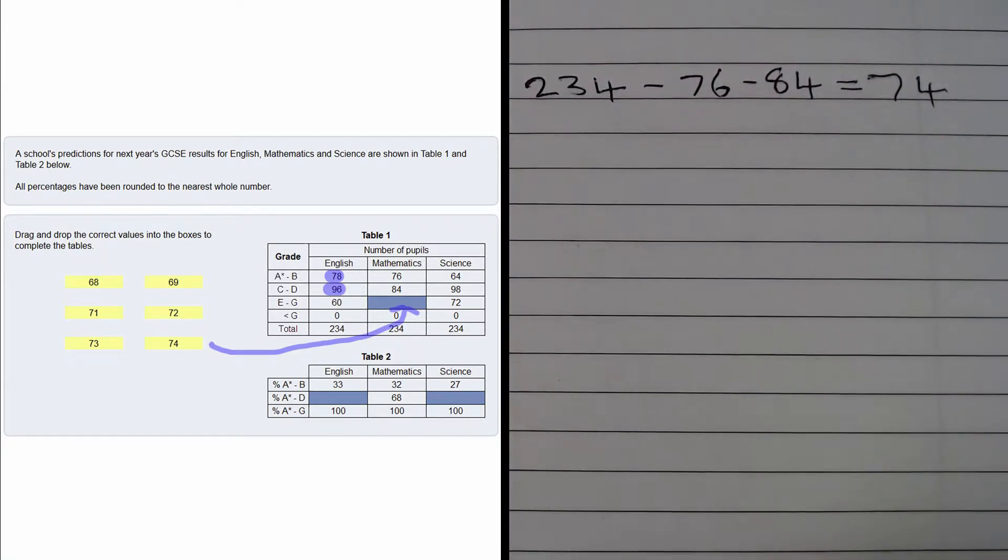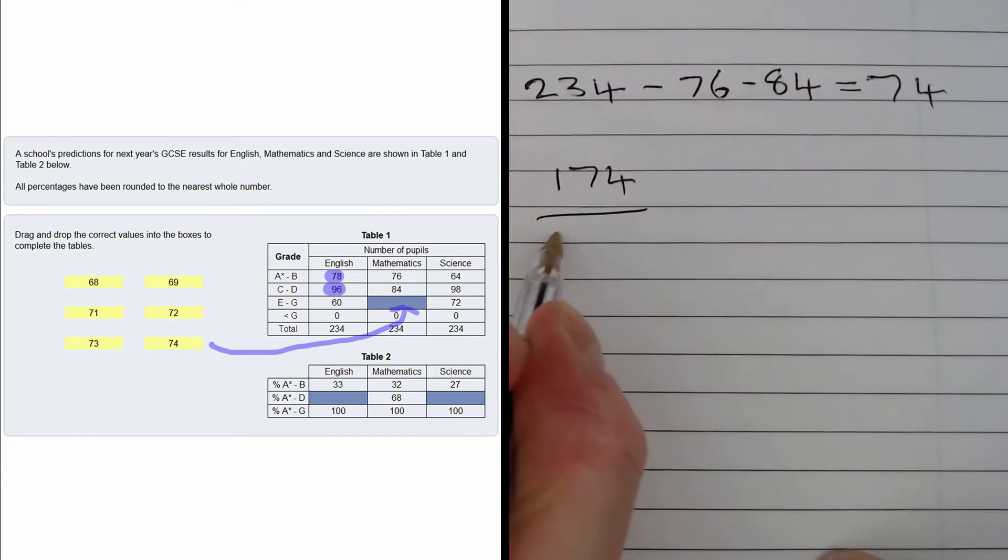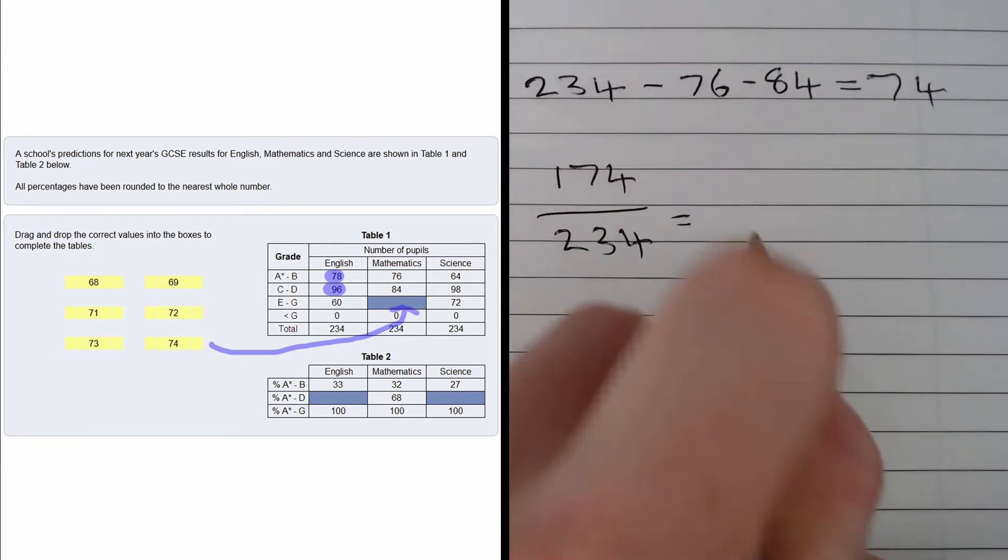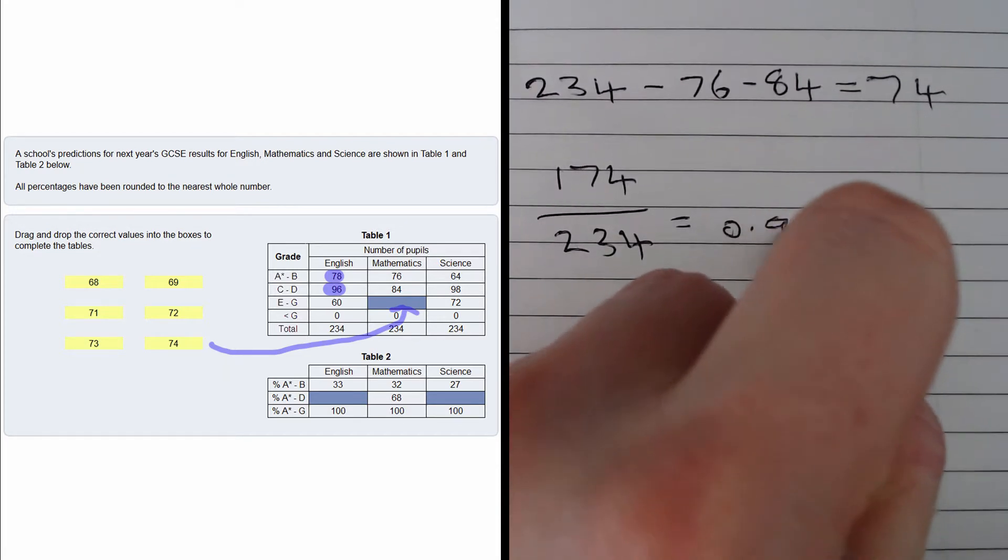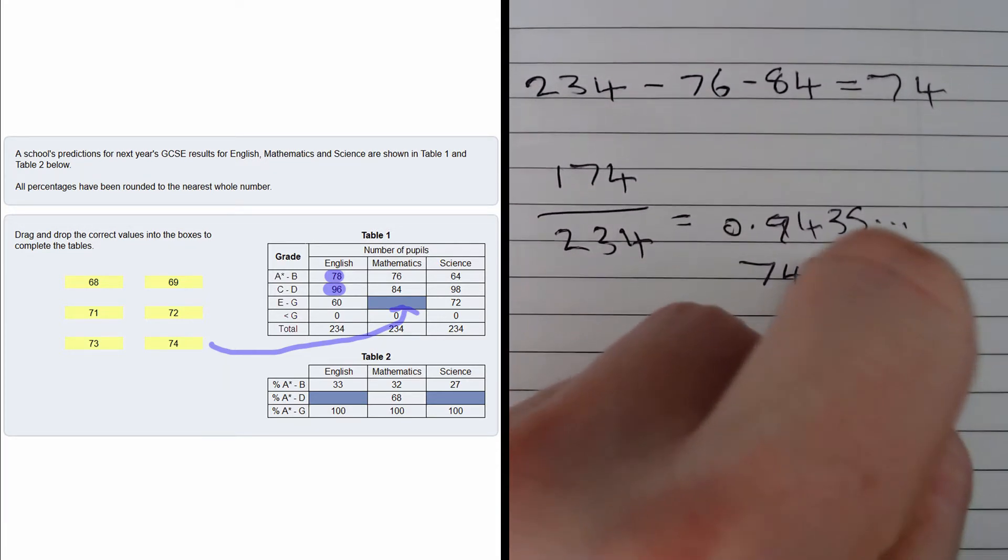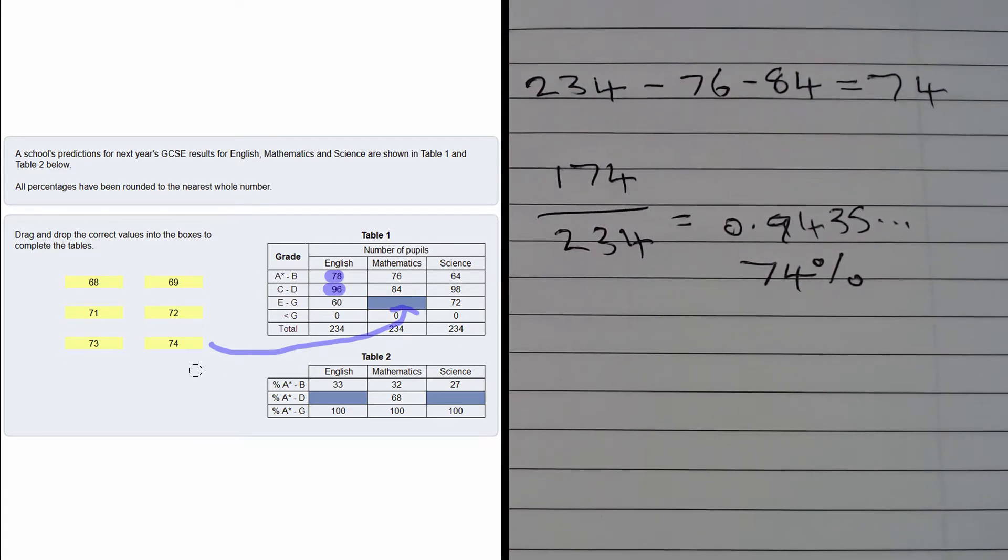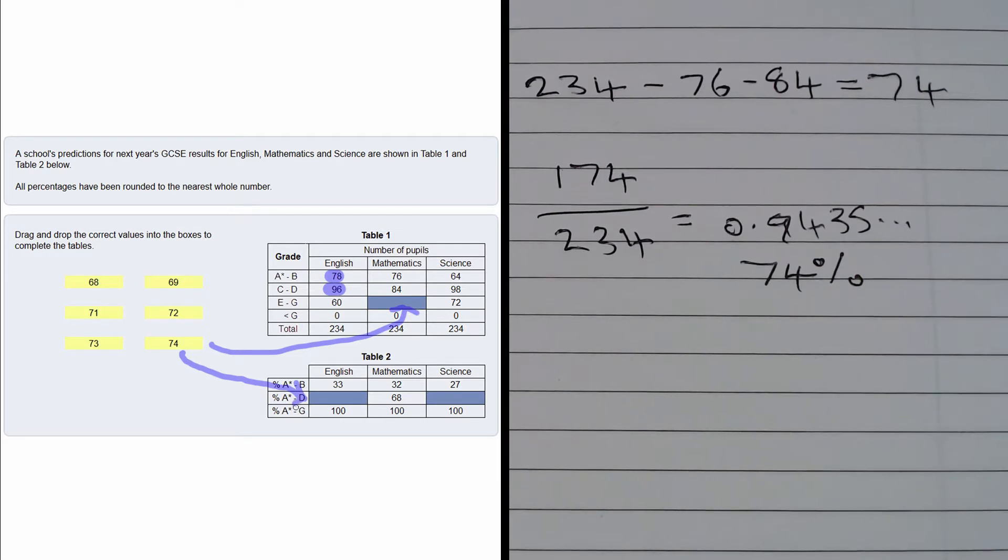That's out of a total of 234, so we do 174 divided by 234, which gives us 0.7435... As a percentage, this is 74%. So this box should have 74%.